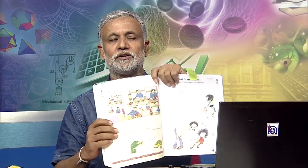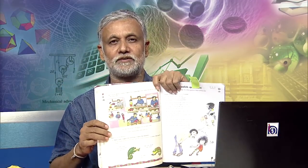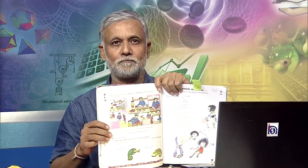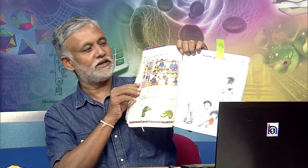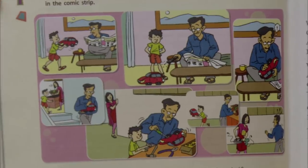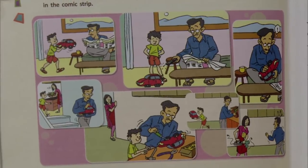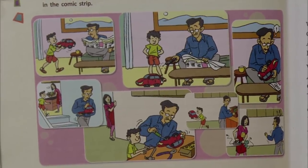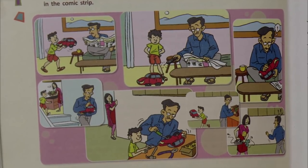For example, I will show you some pictures which are in the classroom textbooks themselves. Now this is one of the textbooks — you can find such pictures. Look at this picture: you can see that a child is at home interacting with the father in certain situations.